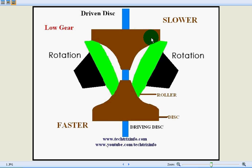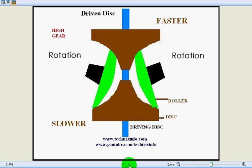In this system, we can see the position of the rollers have changed towards the opposite direction. That means now the rollers are connecting towards the rim of the driving disc and towards almost the center of the driven disc.